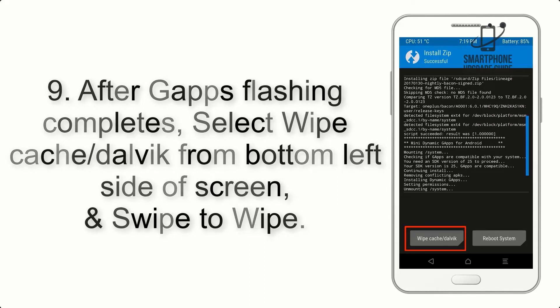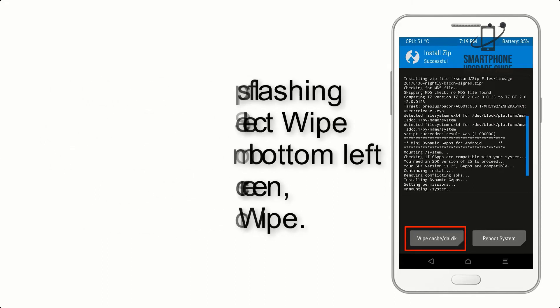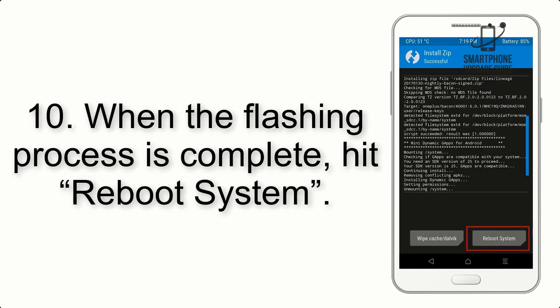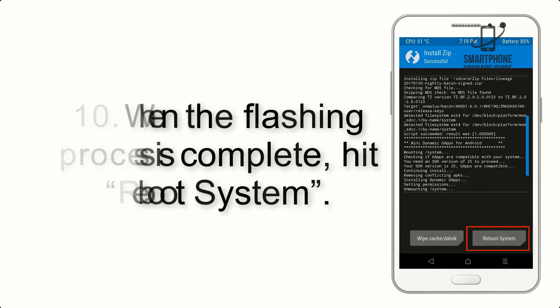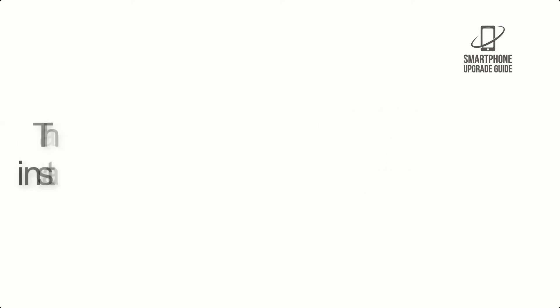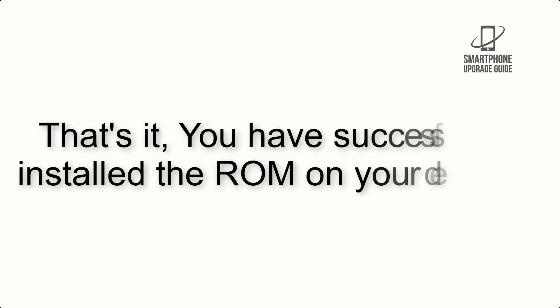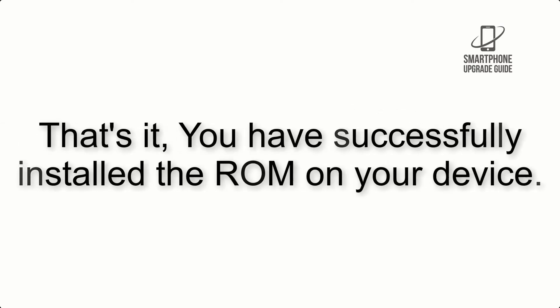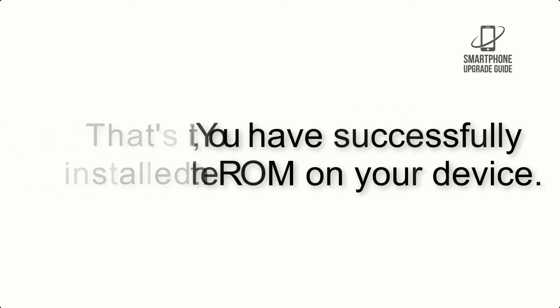Step 9: After gapps flashing completes, select Wipe Cache and Dalvik from the bottom left side of the screen and swipe to wipe. Step 10: When the flashing process is complete, hit Reboot System. That's it — you have successfully installed the ROM on your device.